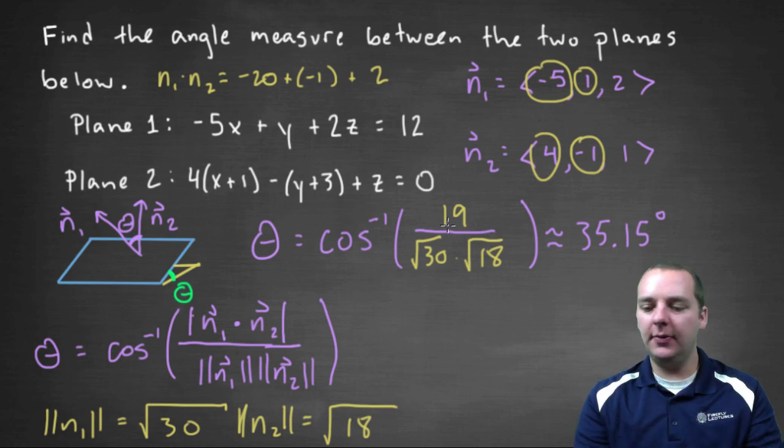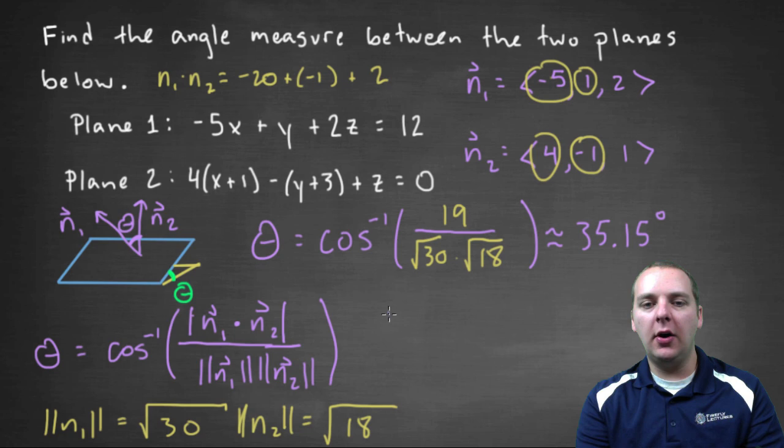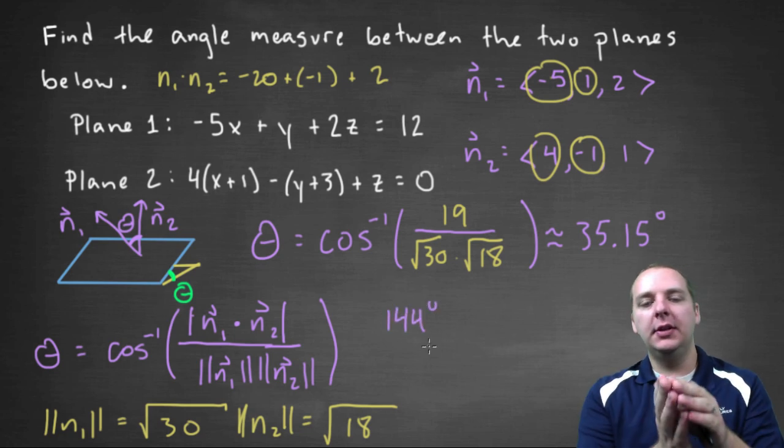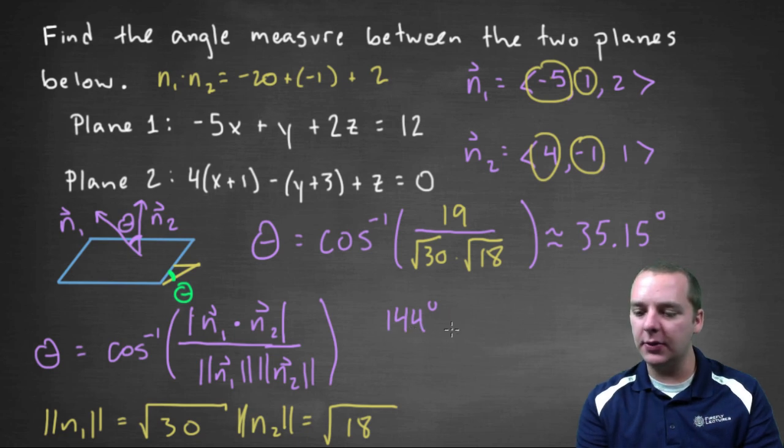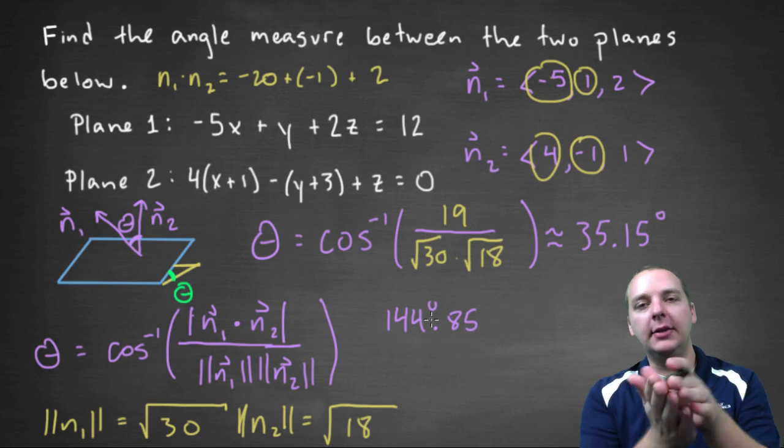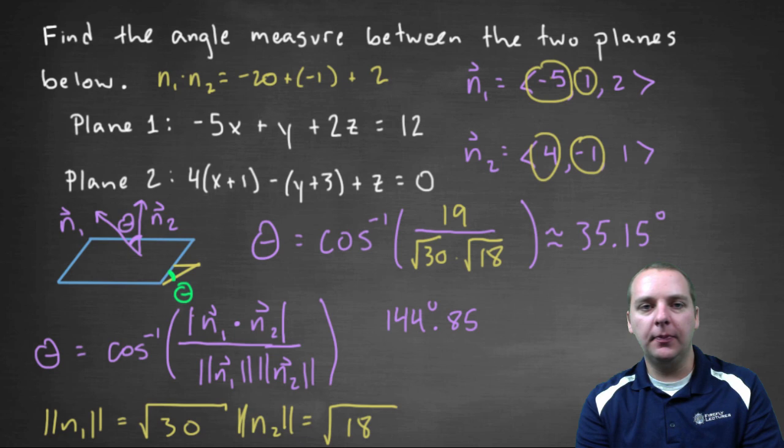If we had left this negative, and in fact let me do this real quick. Let me go back in here, and if we change that nineteen to a negative nineteen, it would have given us a hundred and forty-four degrees, which is the complement of thirty-five degrees. Basically one forty-four, or one forty-five, it's actually one forty-four point eight five. These two add up to one eighty. So what we're doing is we're taking the acute angle out of those two. So that's why we needed that absolute value bar there.